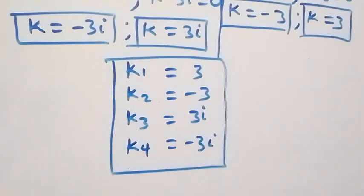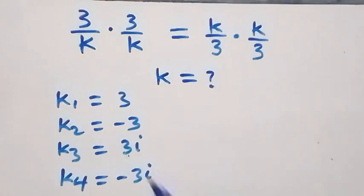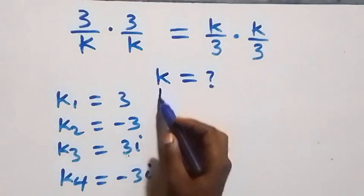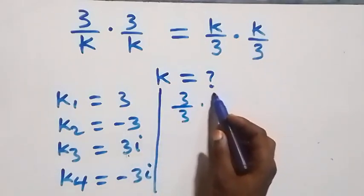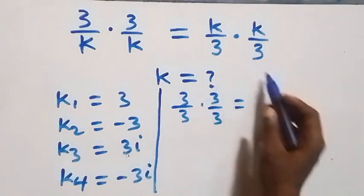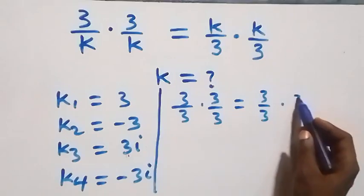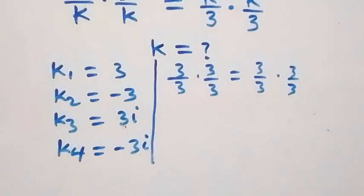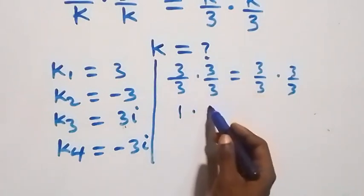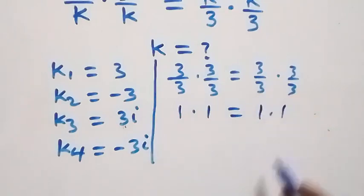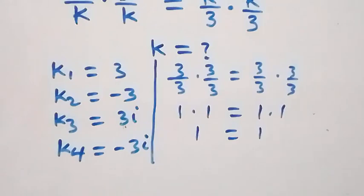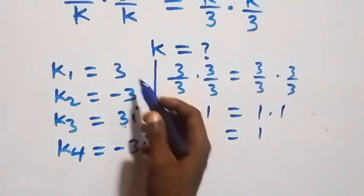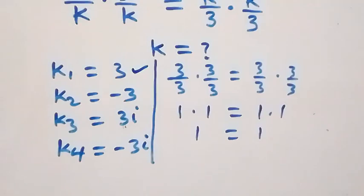Let's check if these satisfy the given problem. Substituting the first value k equals 3: we get 3 over 3 times 3 over 3, which is 1 times 1, equals 1. On the right side also 3 over 3 times 3 over 3, which is 1 times 1, equals 1. Left hand side equals right hand side, so k equals 3 satisfies the given problem.